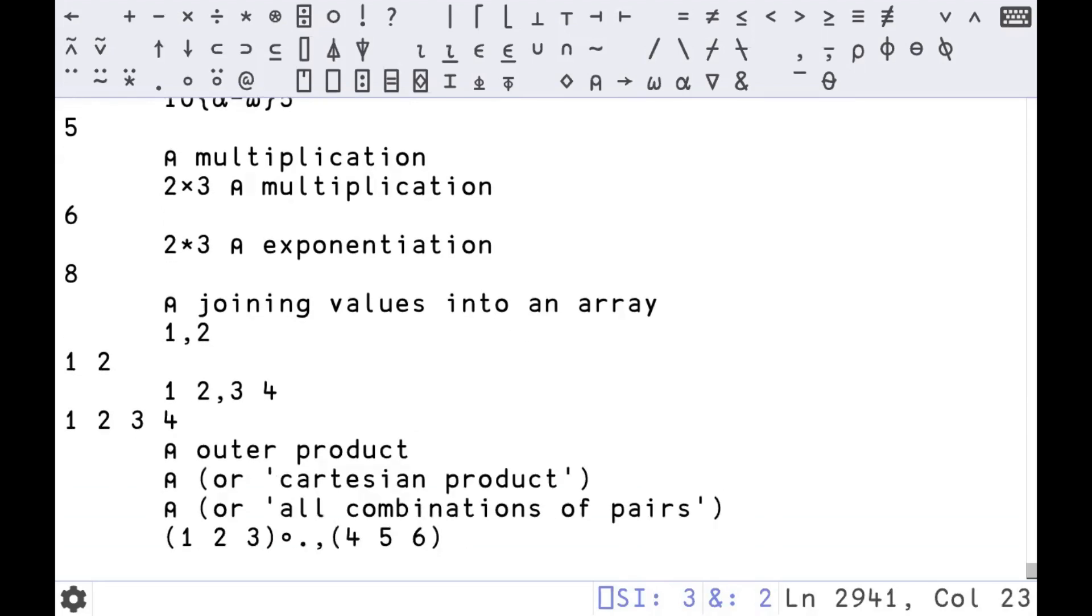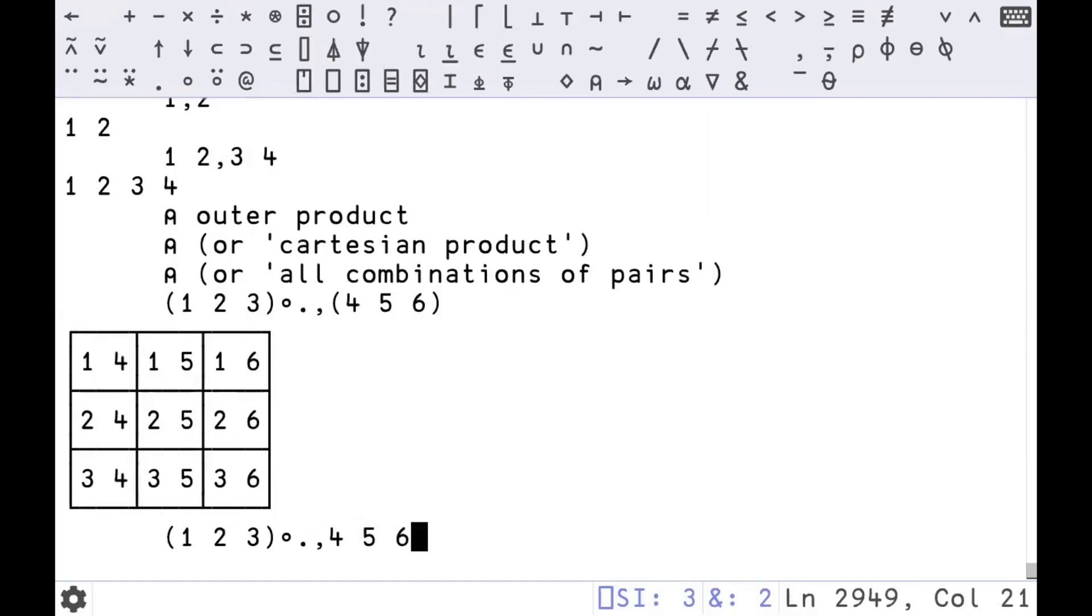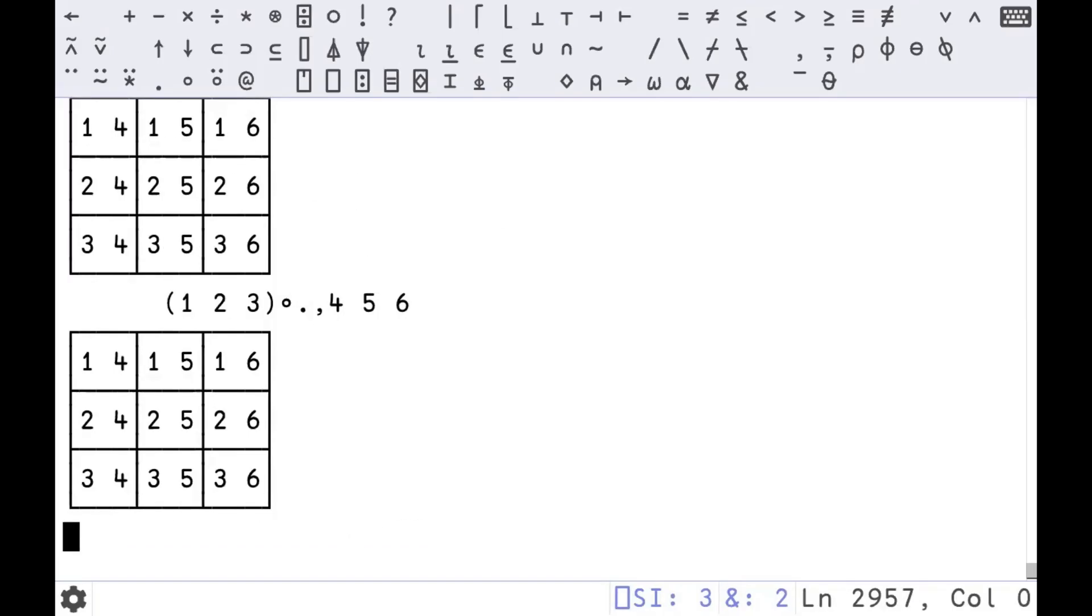Another bit of syntax and the most complicated thing yet is the outer product. The outer product is denoted by this circle, this dot, and then your function. This is the comma function that concatenates two arrays. If you know the idea of the Cartesian product, this is that. Basically think about it as taking all the combinations of pairs of these two arrays, selecting one from each, all the different possible combinations, and applying that function in the middle to all of them and arranging the result in a matrix. Maybe that makes more sense when you see it visually. You can see it took one, two, three, for each one, two, three, matched it up with each four, five, six in a row, returned all of them. There's nine values. We can get rid of the parentheses because of how precedence works.